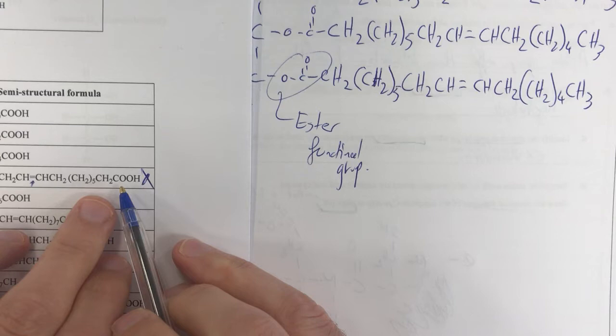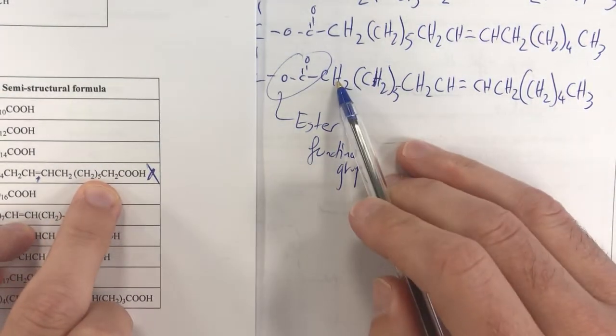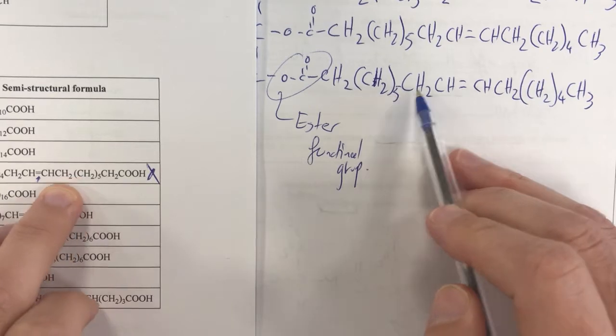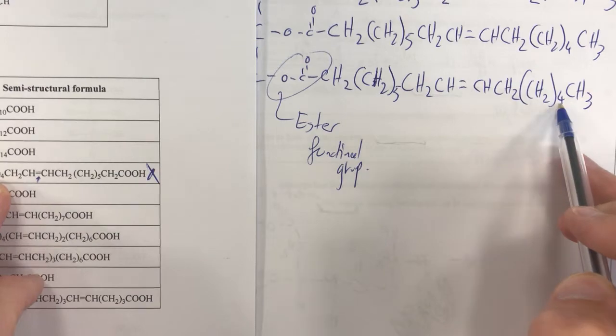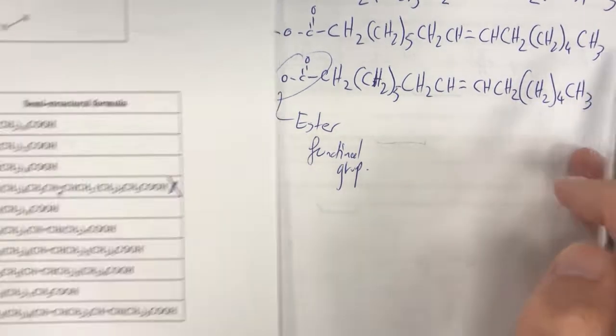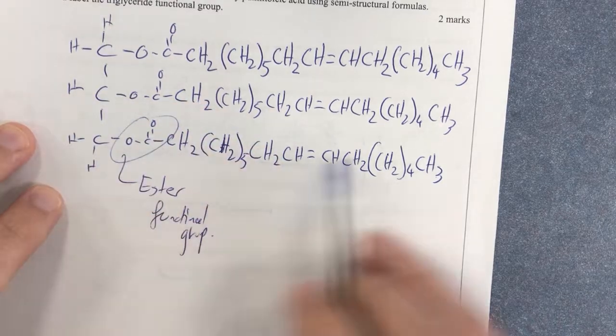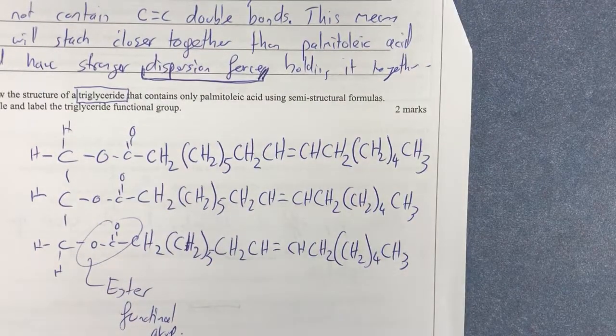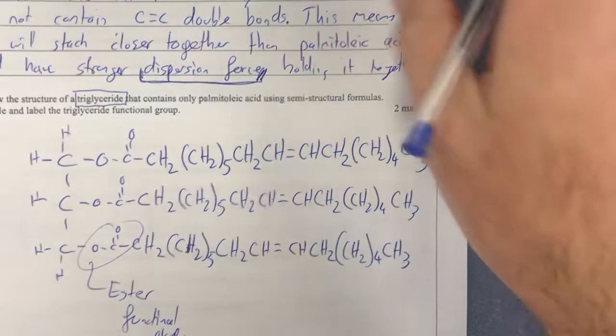Starting again, palmitoleic acid. Starting here, CH2, CH2(5), CH2, CH double bond to CH, CH2, bracket CH2(4), CH3. And that should be fine. And I've circled that. I've drawn that thing out. And there's my two marks for that entire structure, which I think is ridiculous. But so be it. That's the question.